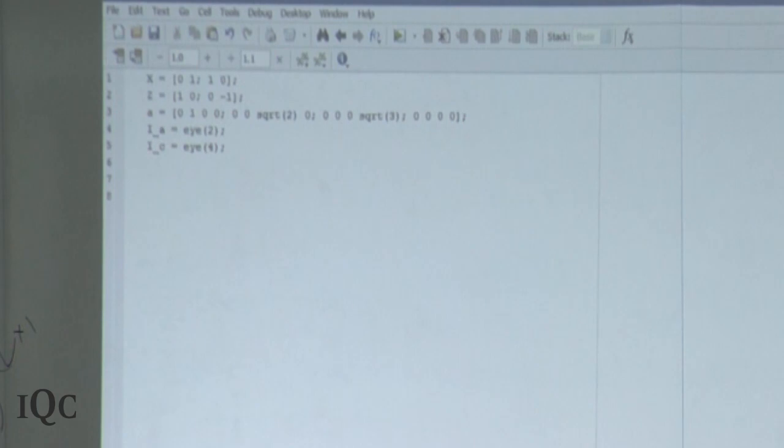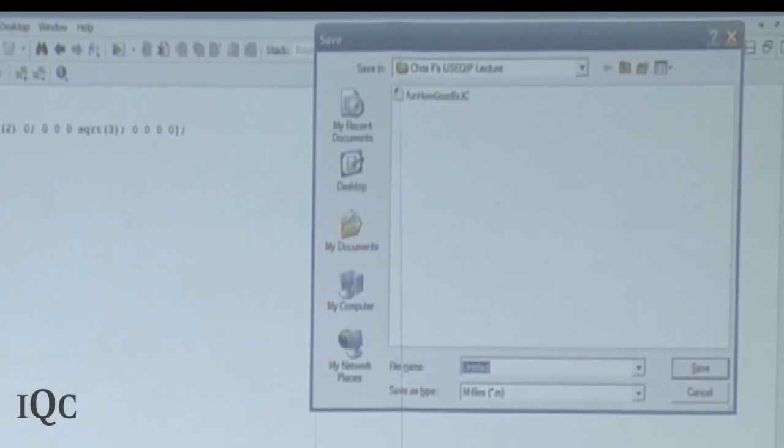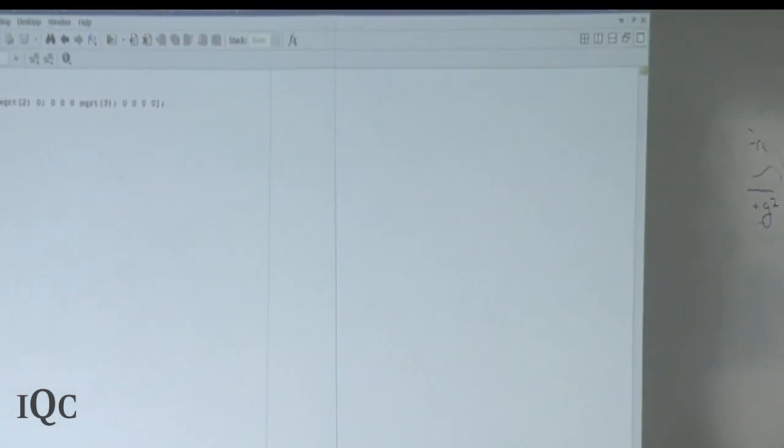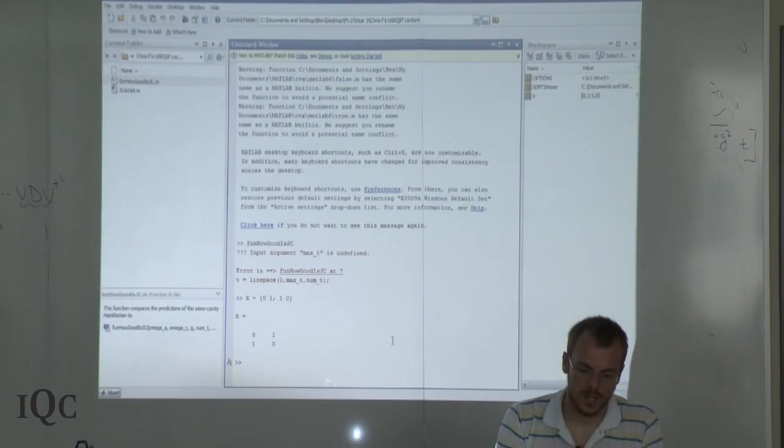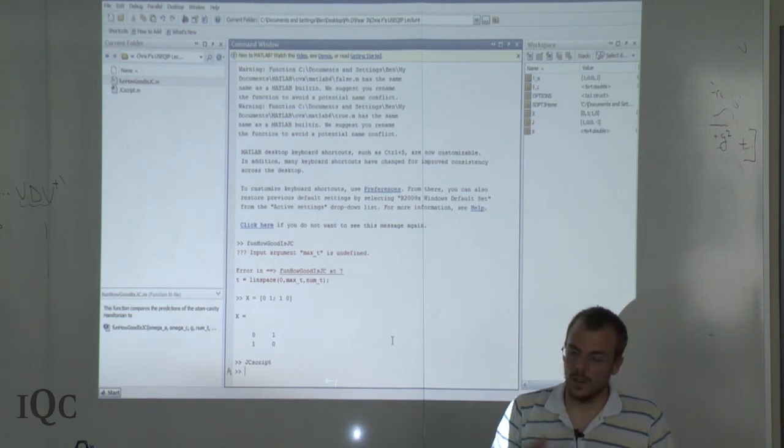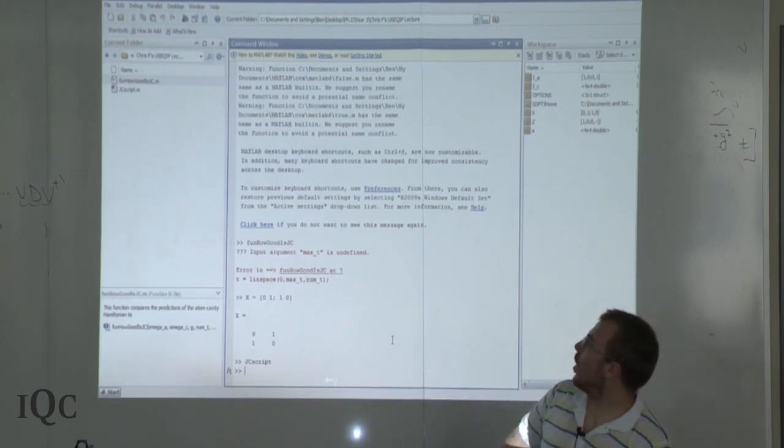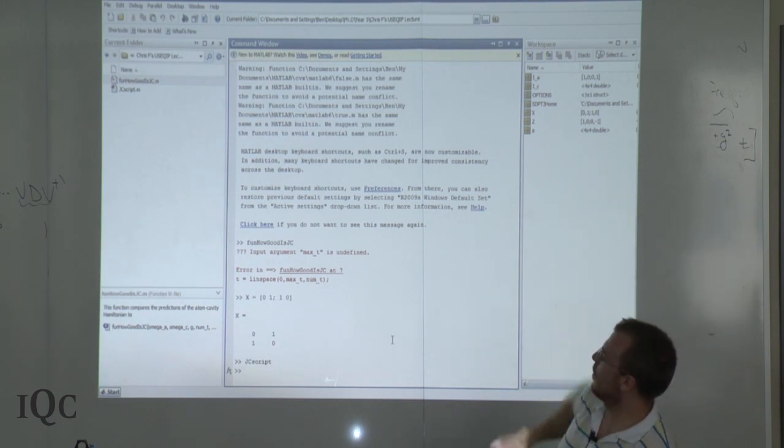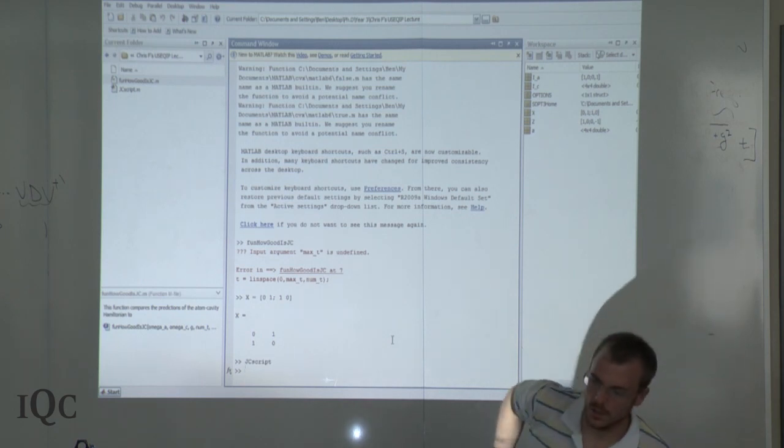Let me save this. Where's it going to end up? Let's just call it the Jaynes-Cummings script. And if I go over to MATLAB and call it, nothing was outputted. But you see, over on the right-hand side, it created all of these variables that we made in the script. They're there, ready to go.